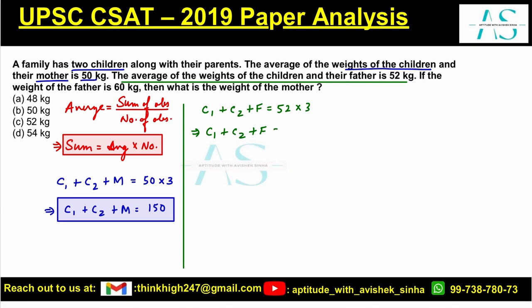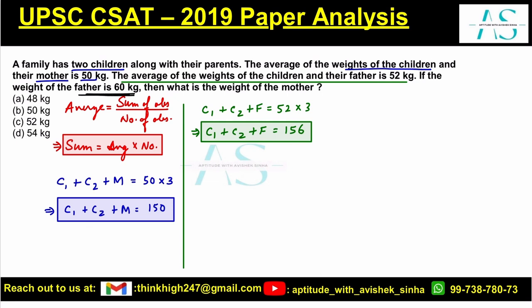Now it is given that the weight of the father is exactly 60 kg. So putting 60 in place of F, we get C1 plus C2 equals 156 minus 60, which is 96.